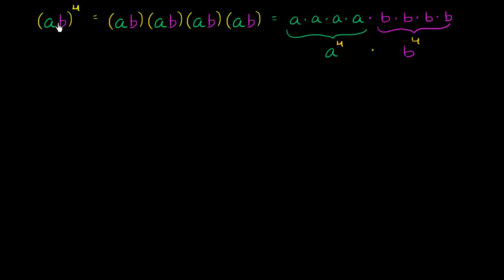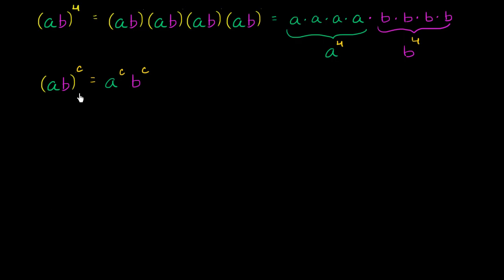This is a general property. Let me write it this way: if I have a times b, and I raise that to the c power, that is going to be equal to a to the c times b to the c. And we'll use this throughout mathematics when we try to simplify things or rewrite an expression in a different way.